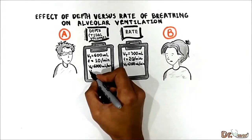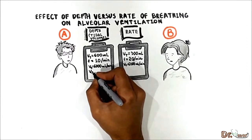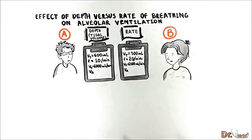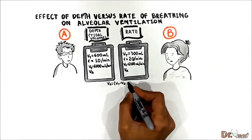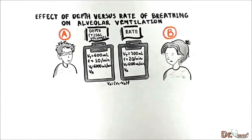Let's calculate it using our formula: VA equals VT minus VD, times F. Where VA is alveolar ventilation, VT is tidal volume, VD is anatomic dead space, and F is respiratory frequency or respiratory rate.